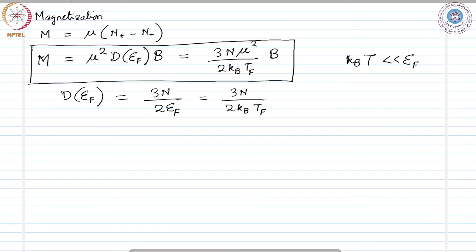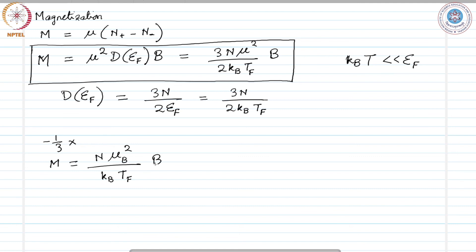Landau has shown that for a free electron, this causes a diamagnetic moment equal to minus one-third of the paramagnetic moment, if we consider that the wave functions are altered but the spatial motion is not. Thus, the total magnetization of the free electron gas — after subtracting the diamagnetic part — becomes n μ_B² over k_B T_F times B, with one-third subtracted from the paramagnetic expression.